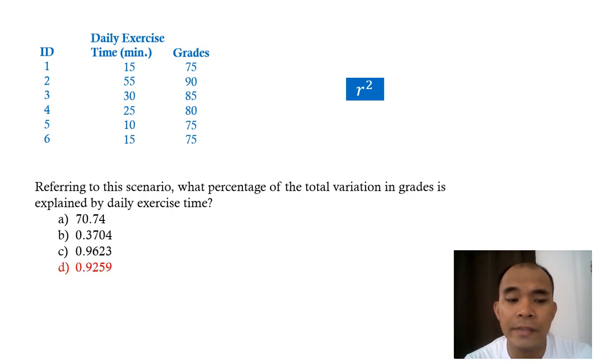The answer for this particular problem is 0.9259 or 92.59% of the variation in grades can be explained by the daily exercise time.